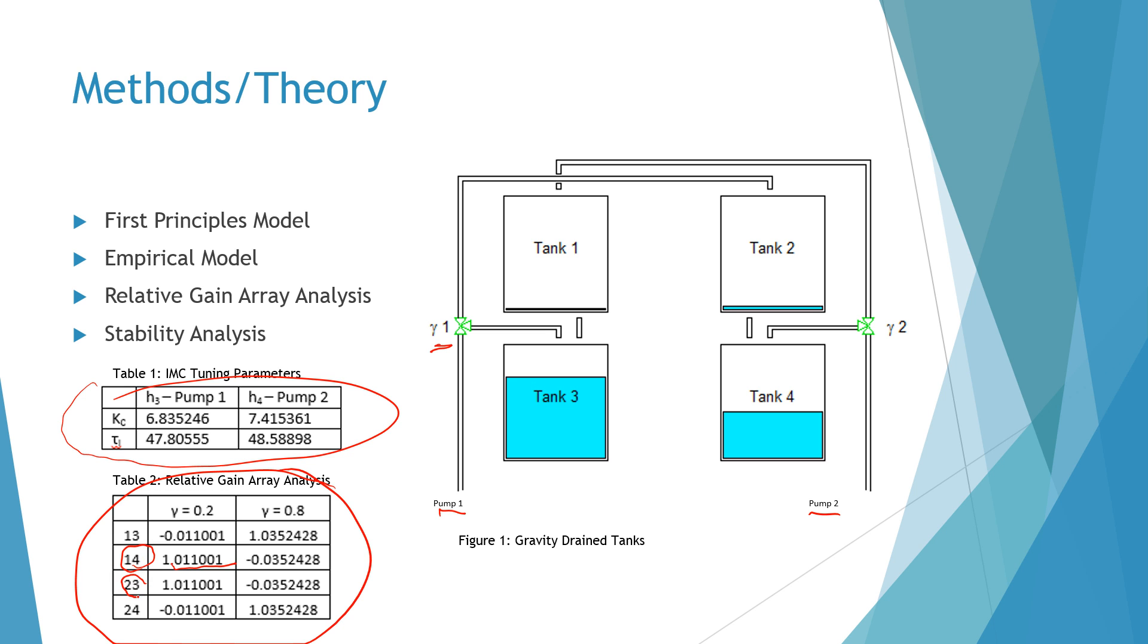We can see from our table that at a gamma value of 0.2 and a gamma value of 0.8 the optimal pairing actually switches between the pump and the tank that should be paired together. We can also see from the negative values on our table that there is a significant interaction between the manipulated variables and how they affect the different levels in the tanks.